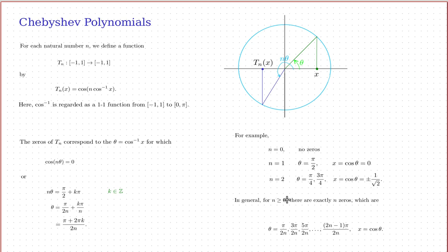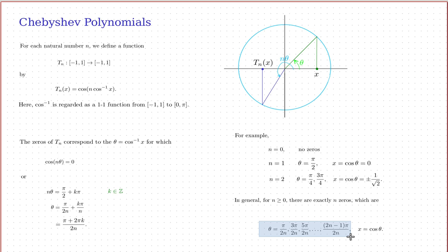In general, for any n, there are always exactly n zeros of tn. The zeros correspond to angles pi/(2n), 3*pi/(2n), 5*pi/(2n), all the way up to (2n−1)*pi/(2n). Those are the angles, and the actual x values that are the zeros of the function are the cosines of those angles.